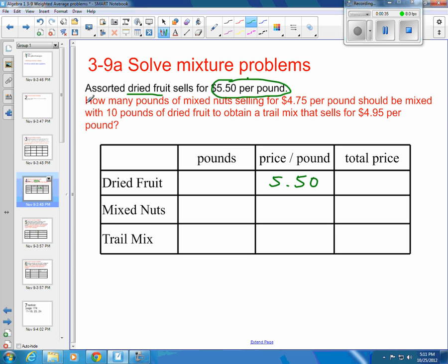How many pounds of mixed nuts is our question. Selling for $4.75 per pound, so our mixed nuts are $4.75 per pound.